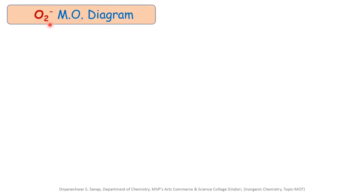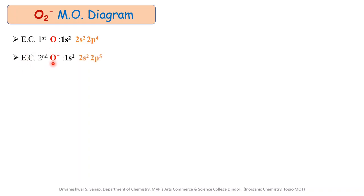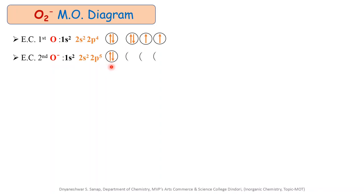The next molecular orbital diagram is for the O2 minus ion. This molecule is formed by the combination of one oxygen atom and one O minus ion. The electronic configuration for oxygen is 1s2, 2s2, and 2p4. The electronic configuration for O minus ion is 1s2, 2s2, and 2p5 — it has one extra electron compared to the neutral oxygen atom because it has accepted one additional electron. Write this electronic configuration in tabulated form: for oxygen, 2s2 and 2p4; for O minus, 2s2 and 2p5. The extra electron is an additional electron added to the valence shell of the oxygen atom.